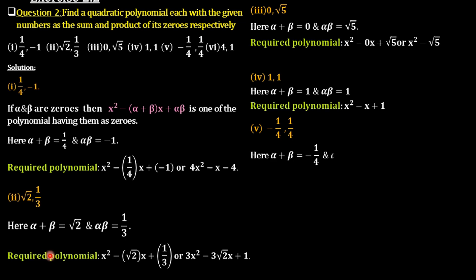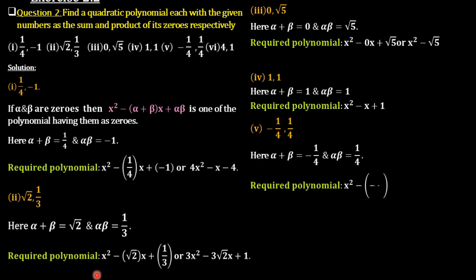The required polynomial is x² minus (negative 1/4)x plus 1/4. The negative becomes positive, giving x² plus (1/4)x plus 1/4. Multiplying each term by 4, we get 4x² plus x plus 1.